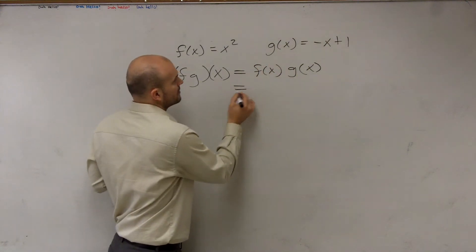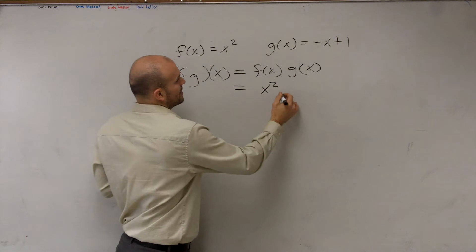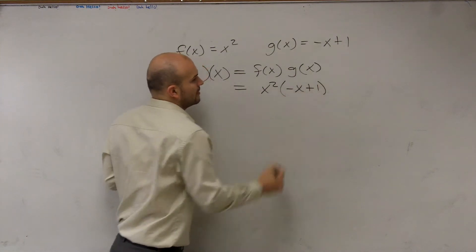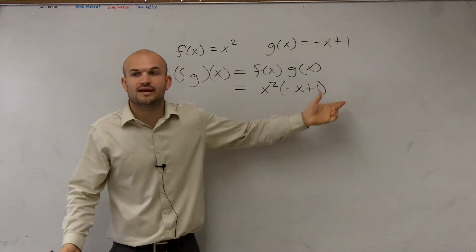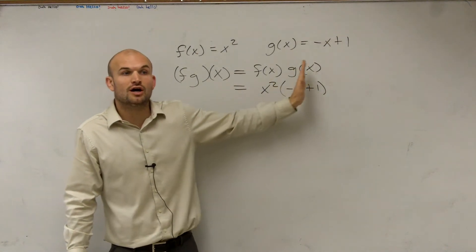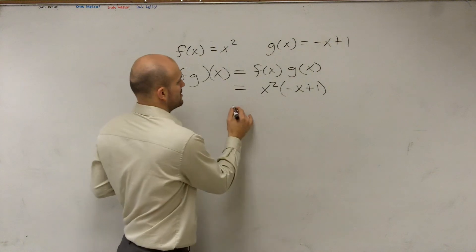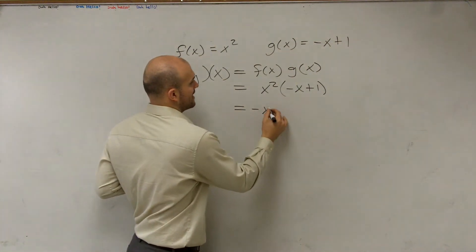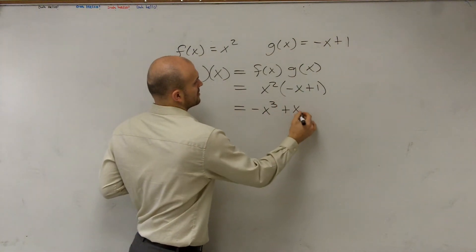So therefore, that's going to equal x² times (-x + 1). Make sure I put this in parentheses to make sure I understand I have to multiply my x² times both of my terms in g of x. Therefore, I'm going to have -x³ + x².